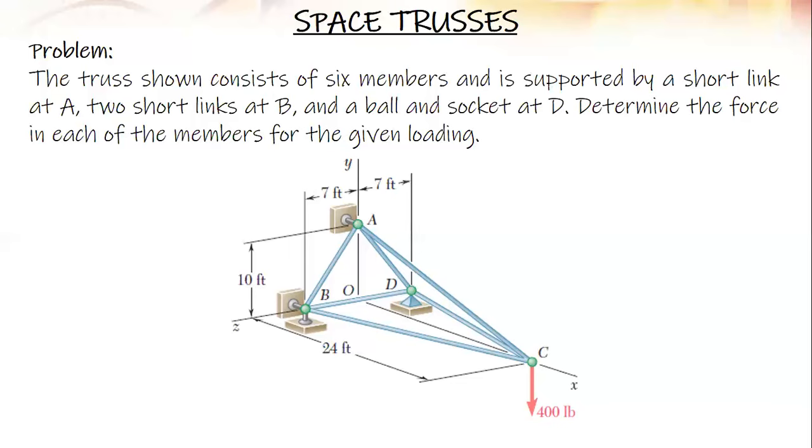So if you check on this space truss, at joint A there are four unknown forces: force in members AB, AC, and AD, and the force at the link. For joint B, there are five unknown forces: force in members BA, BC, and BD, and forces on the two links. At joint D there are six unknown forces: force in members DA, DB, and DC, and for the ball and socket which has three unknown components.